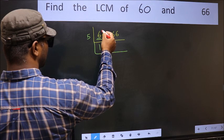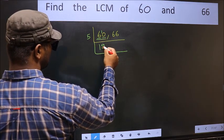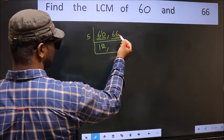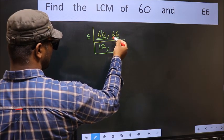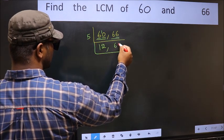6 minus 5 is 1, 1 carried forward 10. When do we get 10 in 5 table? 5 times 2 is 10. The other number 66, last digit is neither 0 nor 5, so this is not divisible by 5, so you write it down as it is.